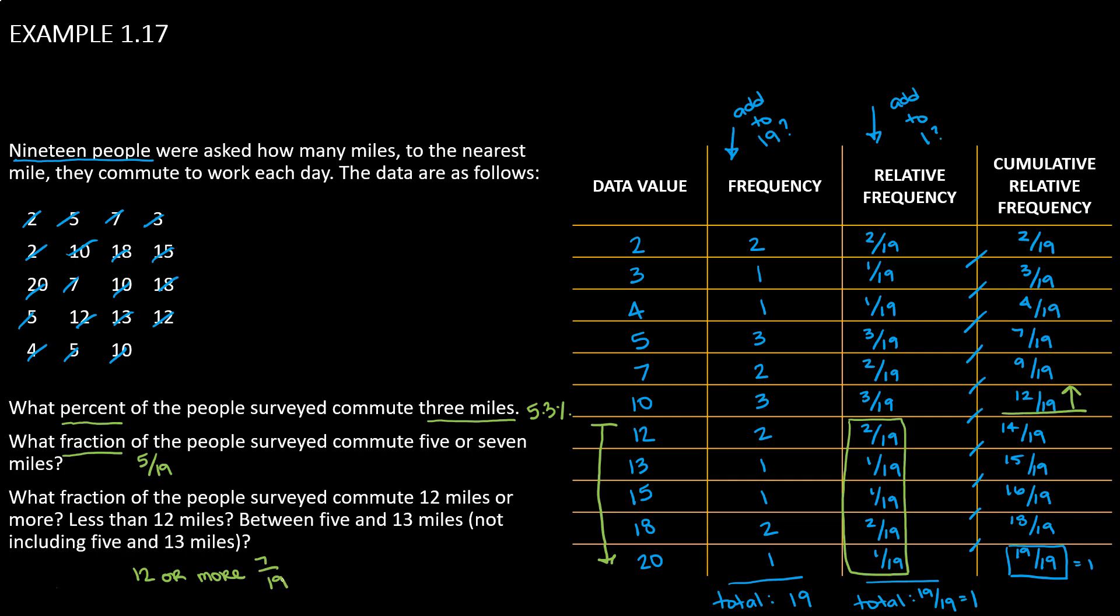If we were to look at less than 12 miles, we have to pay very close attention to the wording there. Less than 12 miles does not include 12. So less than is all of these numbers, 2 miles all the way up to 10. There was nobody who commuted 11 miles, so we would leave 11 out of this.